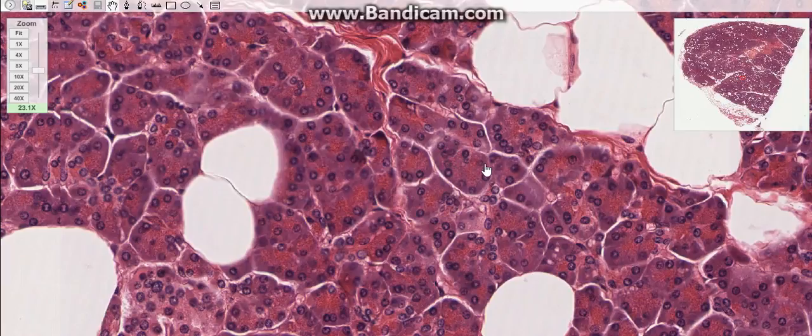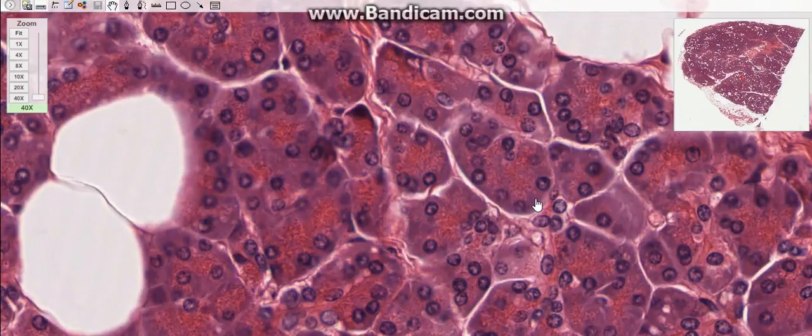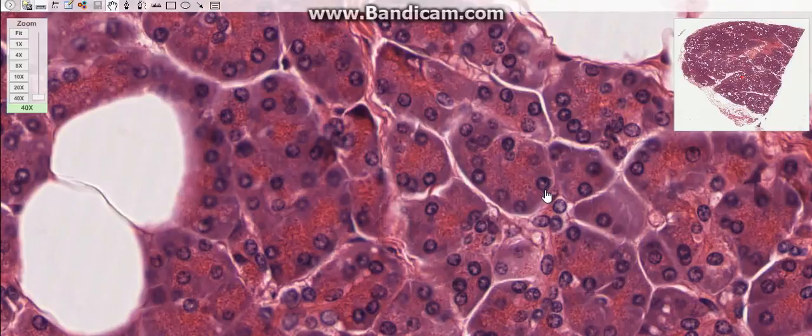The acini have an elongated shape with a narrow lumen and are composed of two types of cells: acinar and central acinar cells. The acinar cells are highly polarized with spherical, basally located nuclei. The basal cytoplasm is basophilic and consists of rough endoplasmic reticulum, while the apical part contains acidophilic zymogen granules.